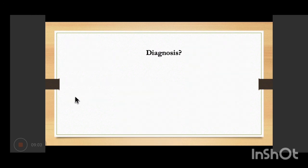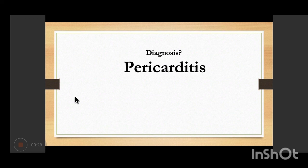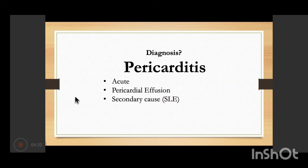The diagnosis is pericarditis — specifically pericarditis with pericardial effusion, with cause secondary to systemic lupus erythematosus. The most common cardiovascular manifestation of SLE is pericarditis.